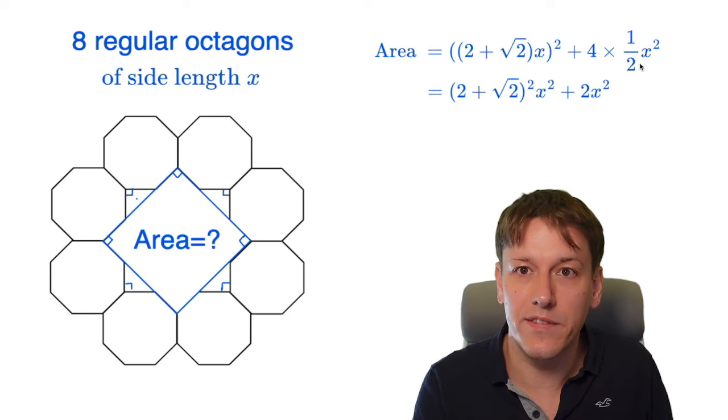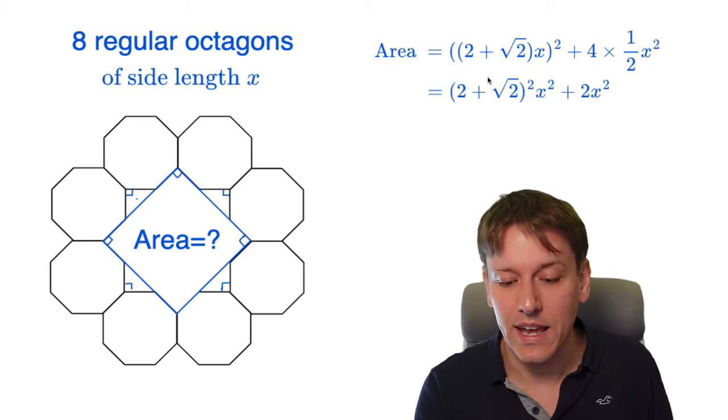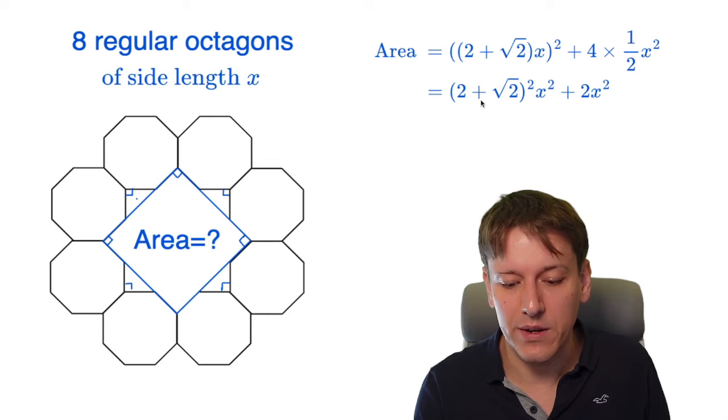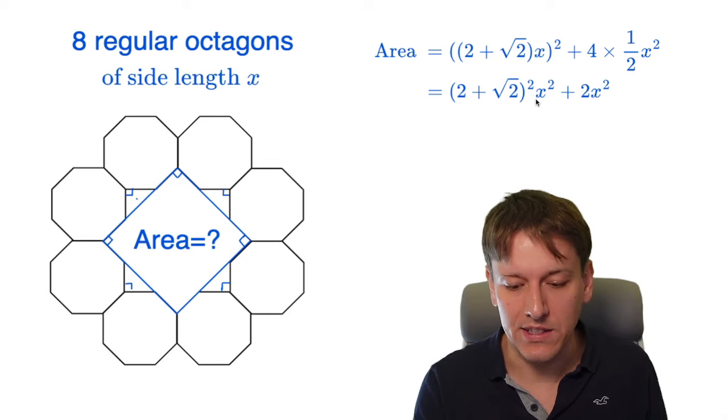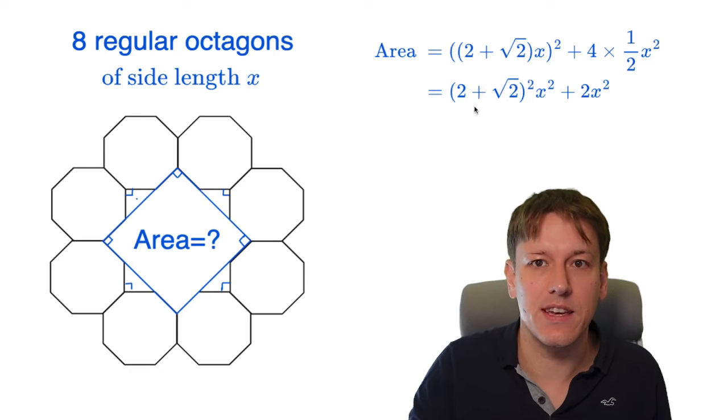So simplifying four times a half x squared just gives us 2x squared, and 2 plus root 2x all squared, I can write as 2 plus root 2 squared times x squared, just getting rid of those outside brackets there.